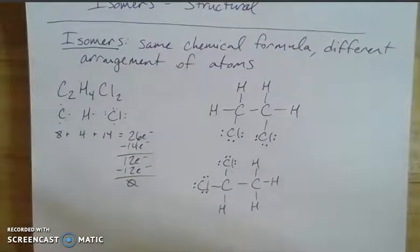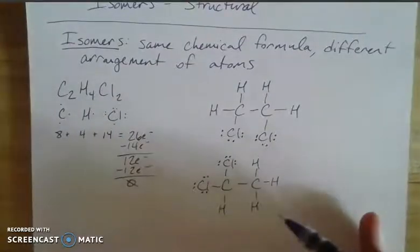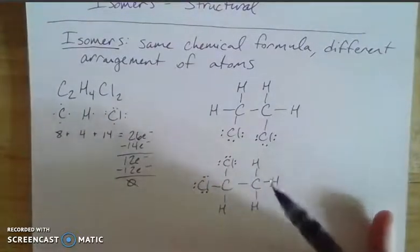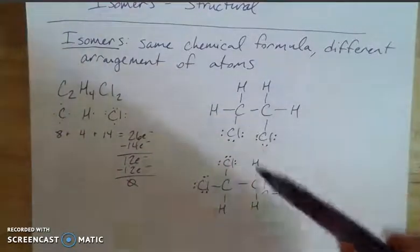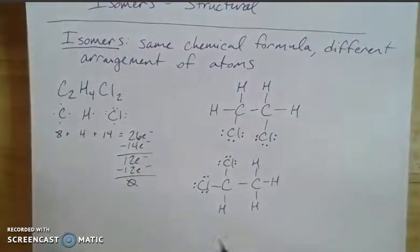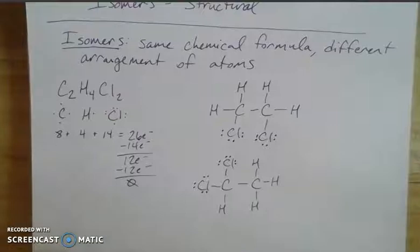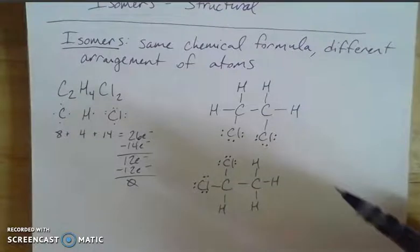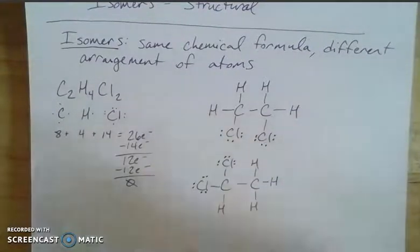These are two entirely different molecules with entirely different properties. One ends up being polar and the other non-polar, because of the positioning of the chlorines on the structure. With isomers, in many cases one will form more readily than others, or you can tweak conditions to favor one. Understanding isomerism helps us understand what the product is going to be and what the potential arrangements are.